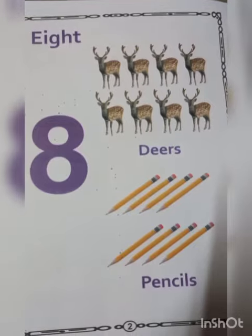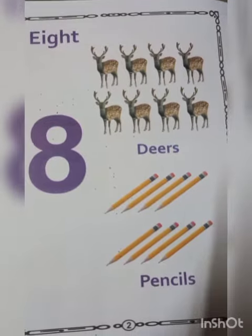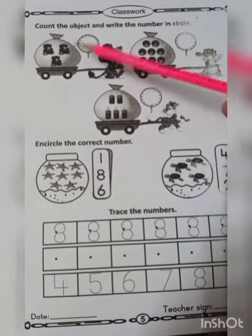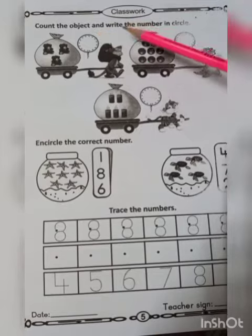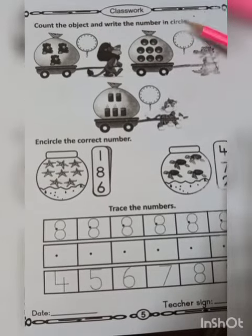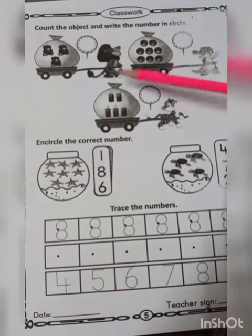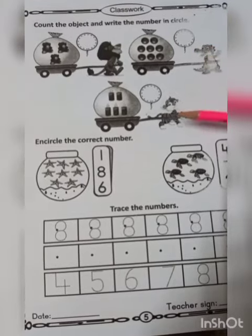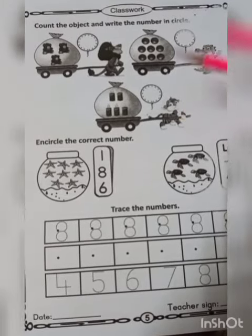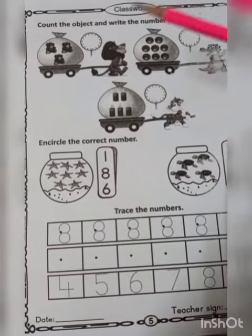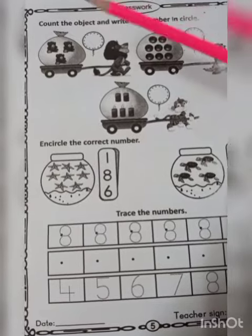Now open page number 5. Count the object and write the number in the circle. Okay. यहाँ पर लॉइन हैं, ऐलिगेटर हैं, और टाइगर हैं. अब देखते हैं लॉइन के पास कितने बियर्ज हैं.